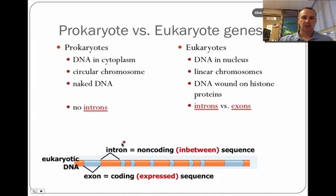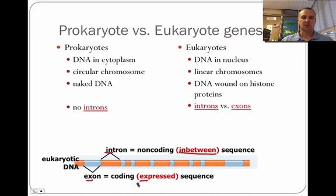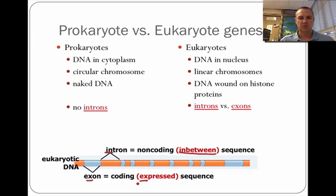To speak about introns and exons: introns are the in-between stuff — they're not important. Exons are the expressed stuff; these are the actual parts that matter. It's believed that introns came about because they allowed eukaryotes to have many different types of genes, since they allow the DNA to be broken up and re-spliced in different places pretty easily. So introns might be an evolutionary advantage to create more and more proteins.